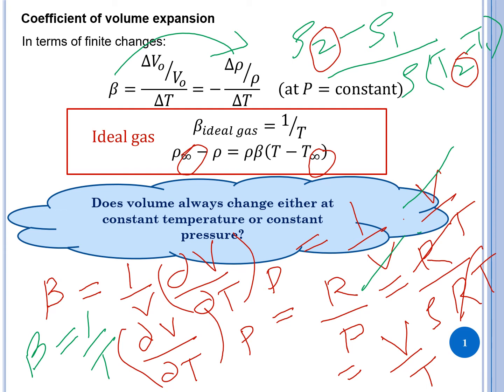For an ideal gas, this gives: rho-infinity minus rho equals rho times beta times (T minus T-infinity). Does volume always change at constant temperature or constant pressure? I leave that question for you to answer in the Q&A session.